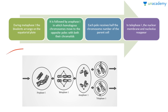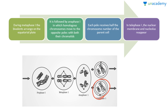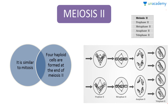During metaphase I, the bivalents arrange on the equatorial plate — you can see this here. It is followed by anaphase I, in which homologous chromosomes move towards opposite poles with both their chromatids, so each pole receives half the chromosome number of the parent cell. In telophase I, the nuclear membrane and nucleus reappear.